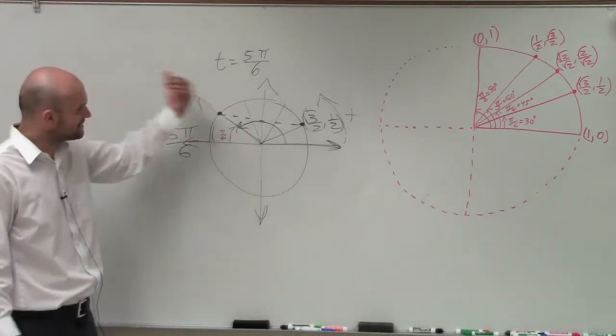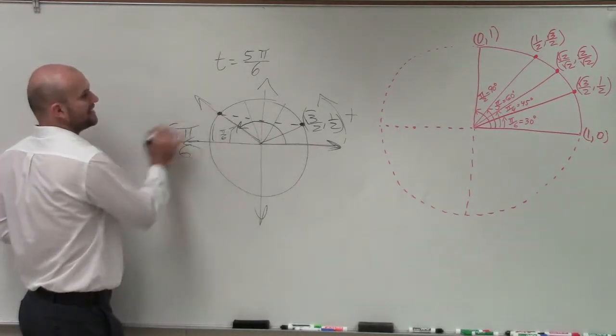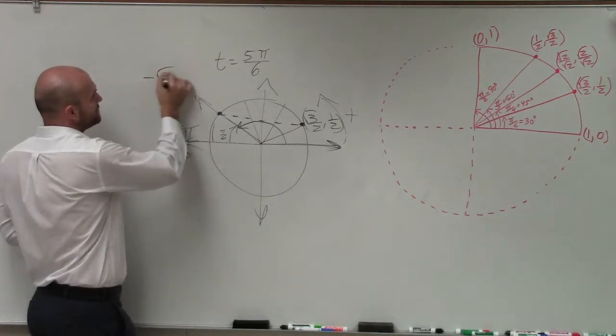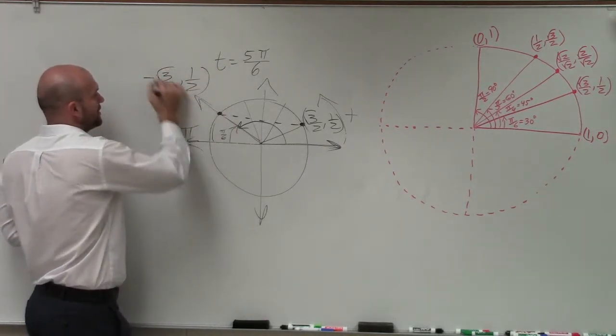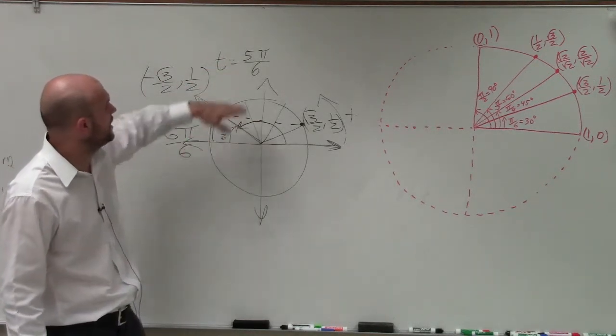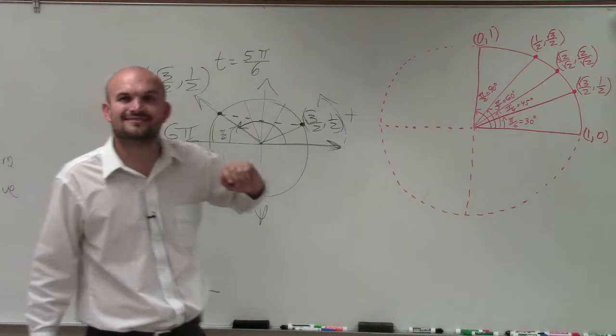So therefore, if I reflect that over the y-axis, you can now see that this coordinate point, my x is going to be negative. So it's negative square root of 3 over 2, comma, a positive 1 half. So there you go, ladies and gentlemen. That is how you find your coordinate point when you've got your angle 5 pi over 6. Thanks.